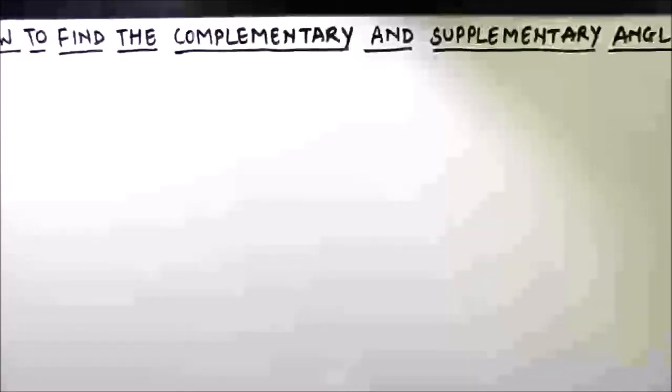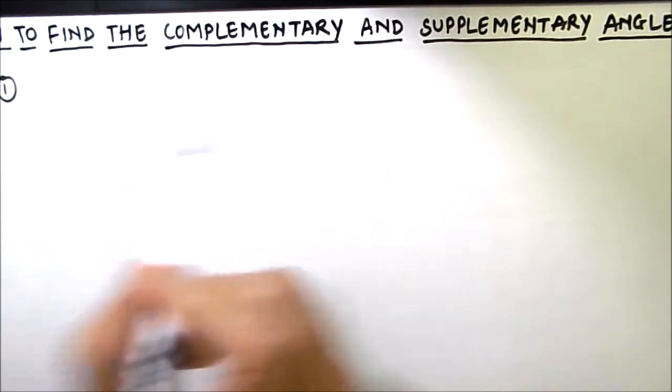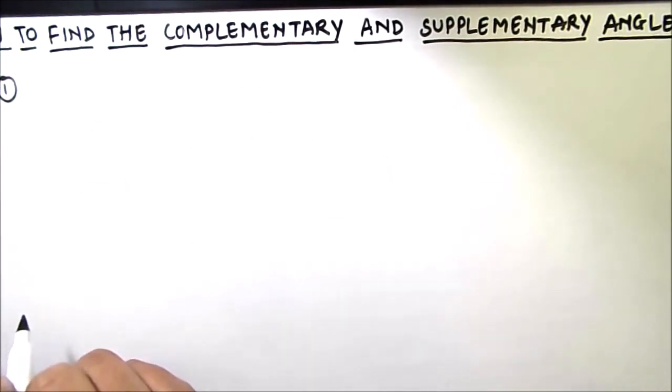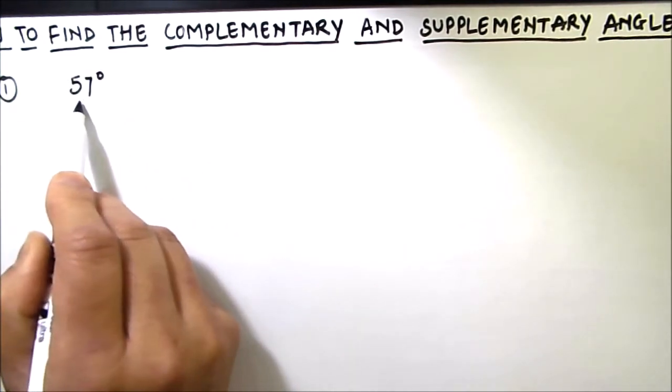Hello everyone, in this video we are going to learn how to find supplementary angles. Two angles are said to be supplementary when their sum is equal to 180 degrees. Let's find the angle which is supplement to 57 degrees.